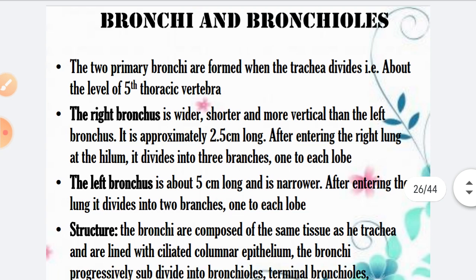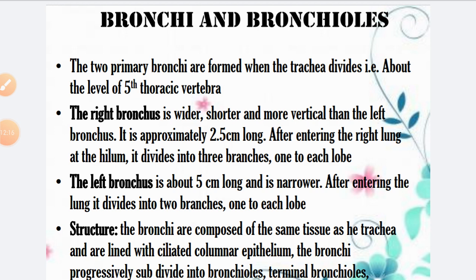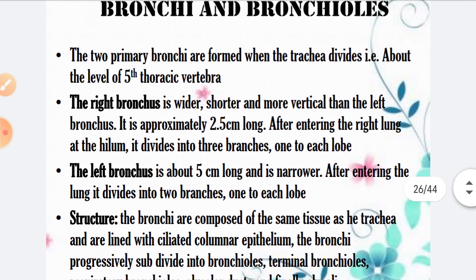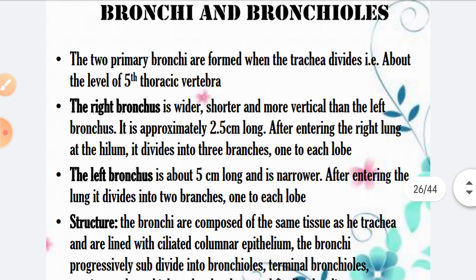The next structures are the bronchi and bronchioles. Two primary bronchi are formed when the trachea divides at the level of the 5th thoracic vertebra. The right bronchus is wider, shorter, and more vertical than the left bronchus. It is approximately 2.5 cm long, and after entering the right lung at the hilum, it divides into three branches — one to each lobe.